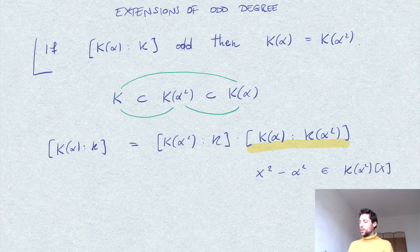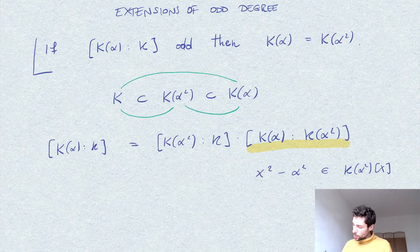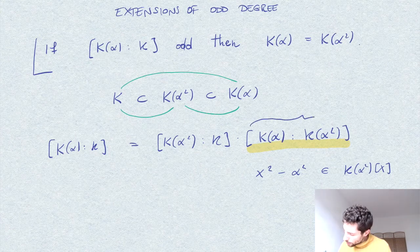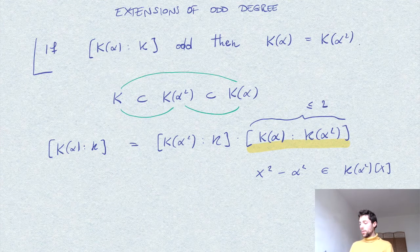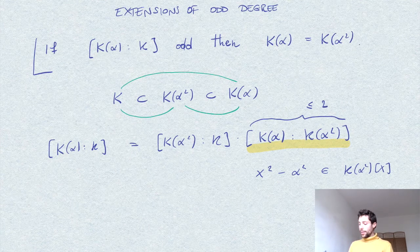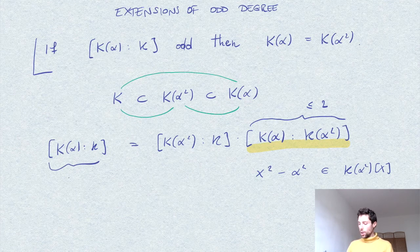So this extension will have degree either two or one. On the other hand, we know that this one, by assumption, is odd.